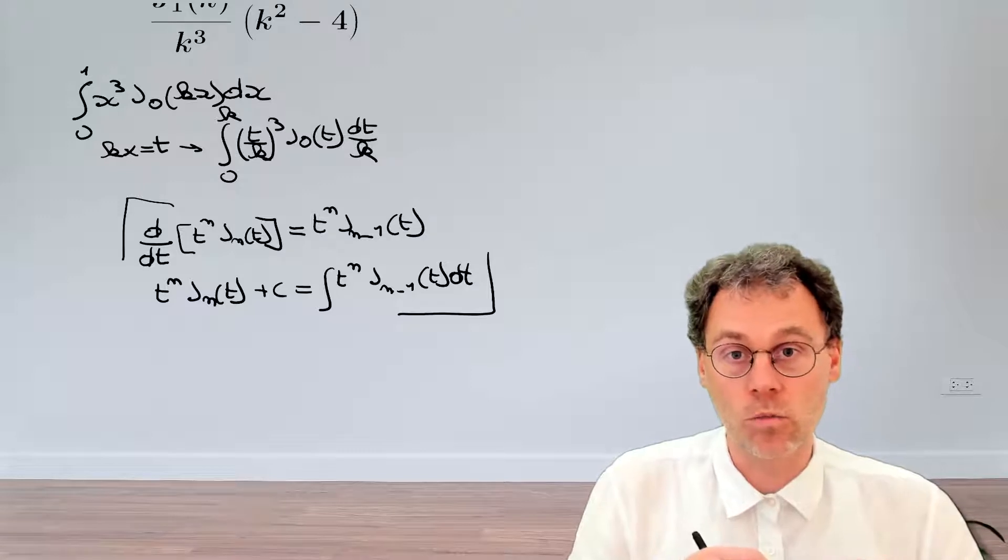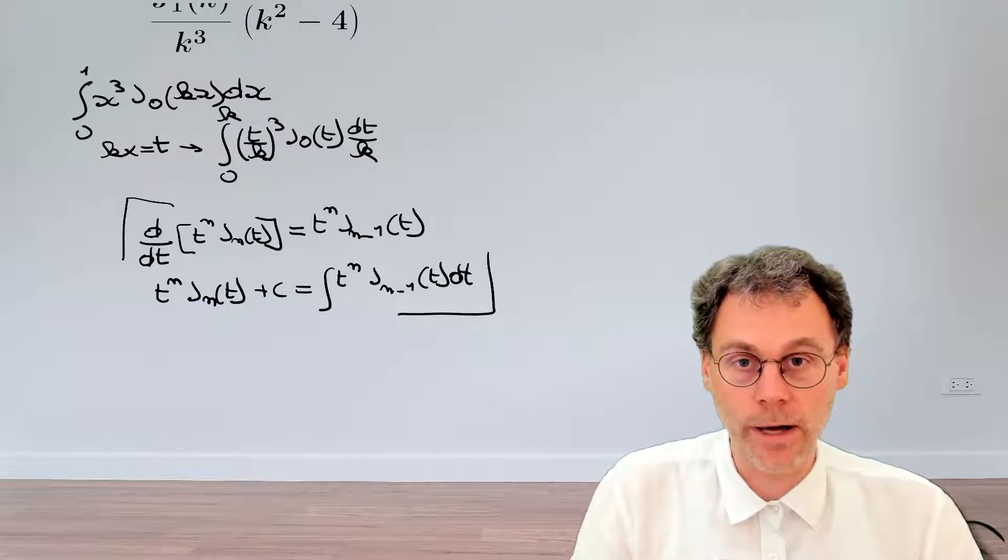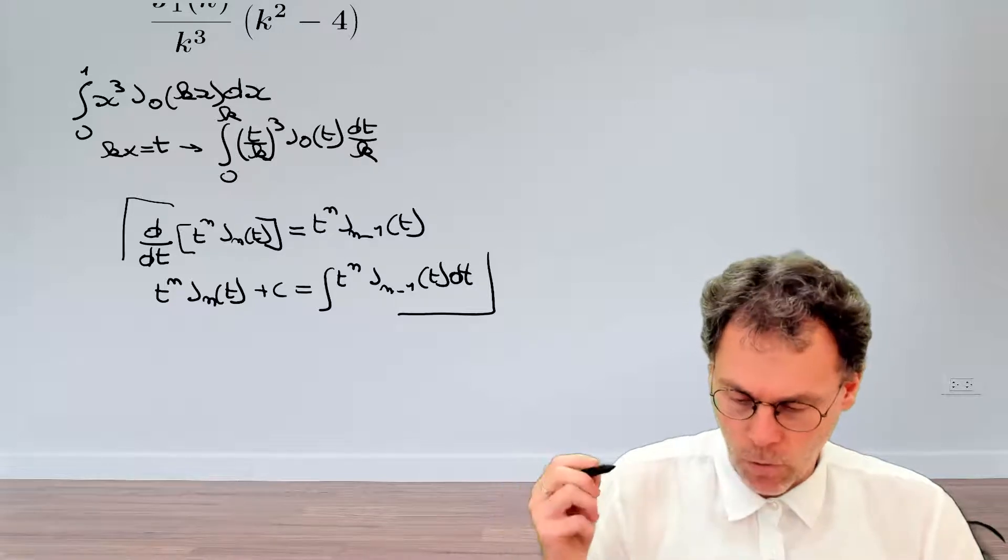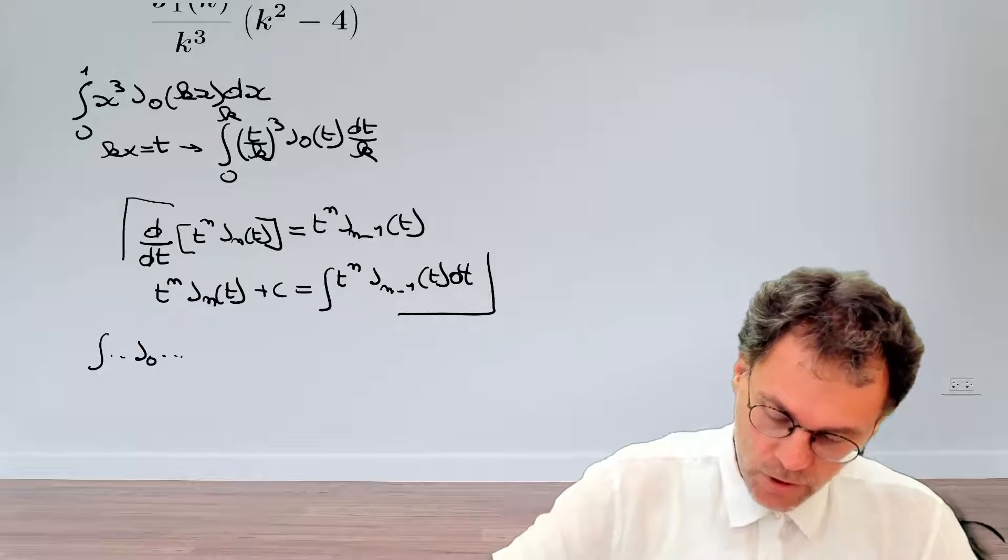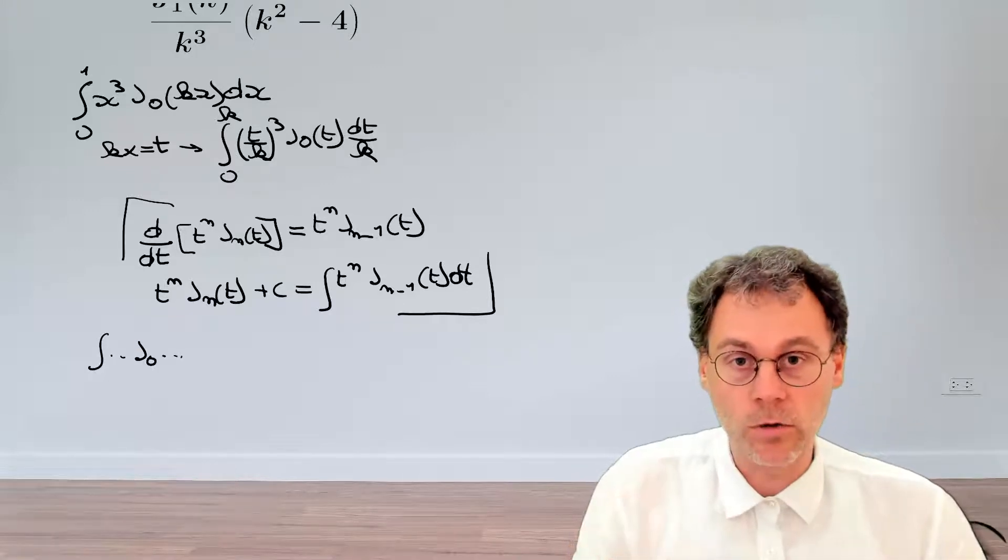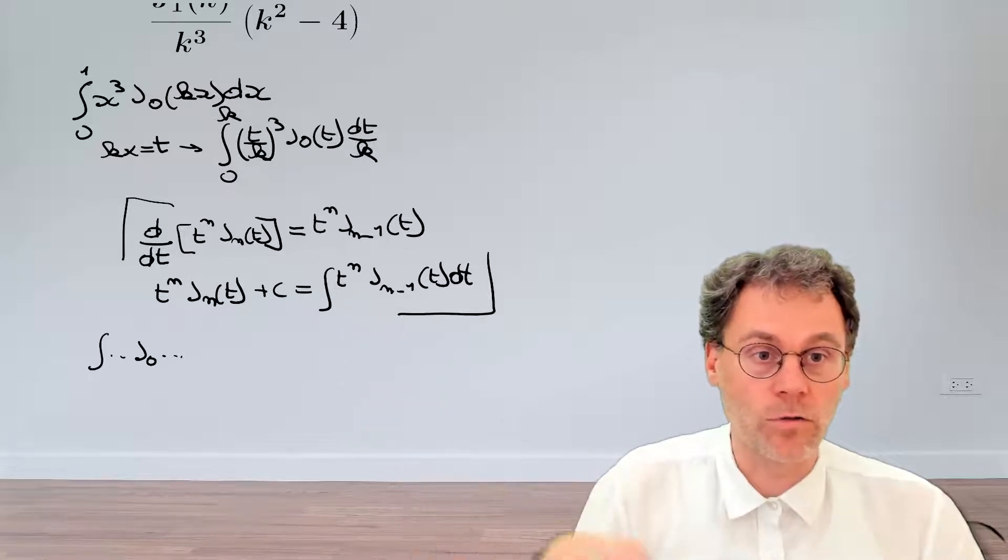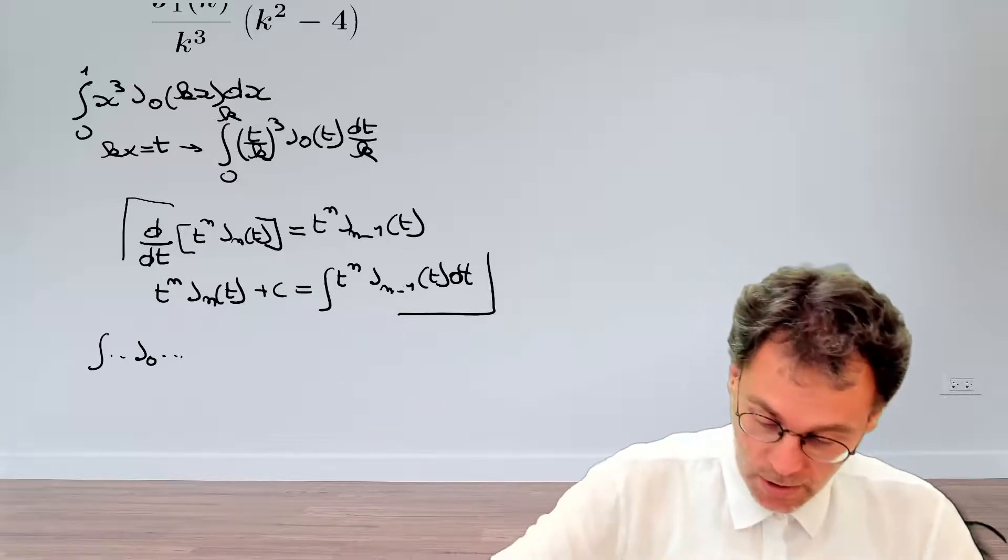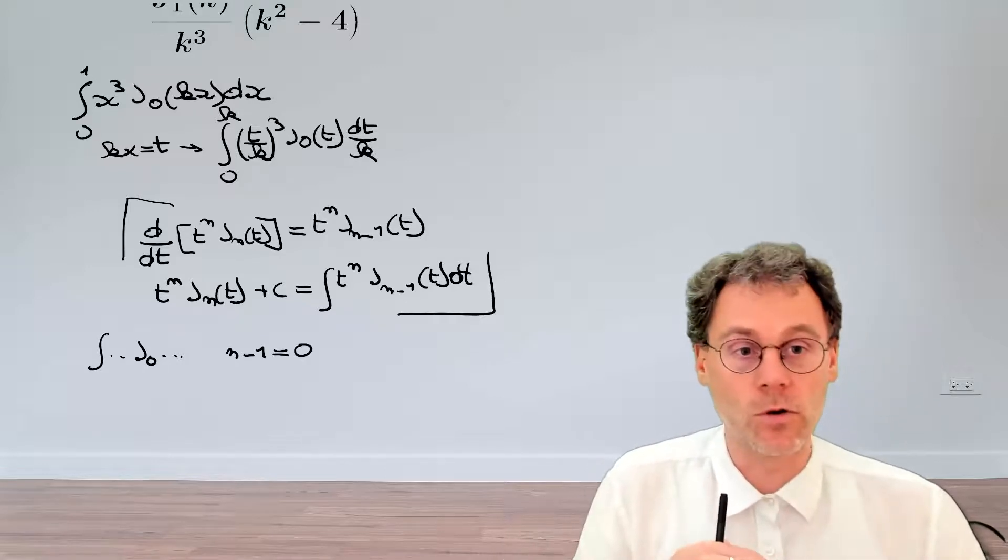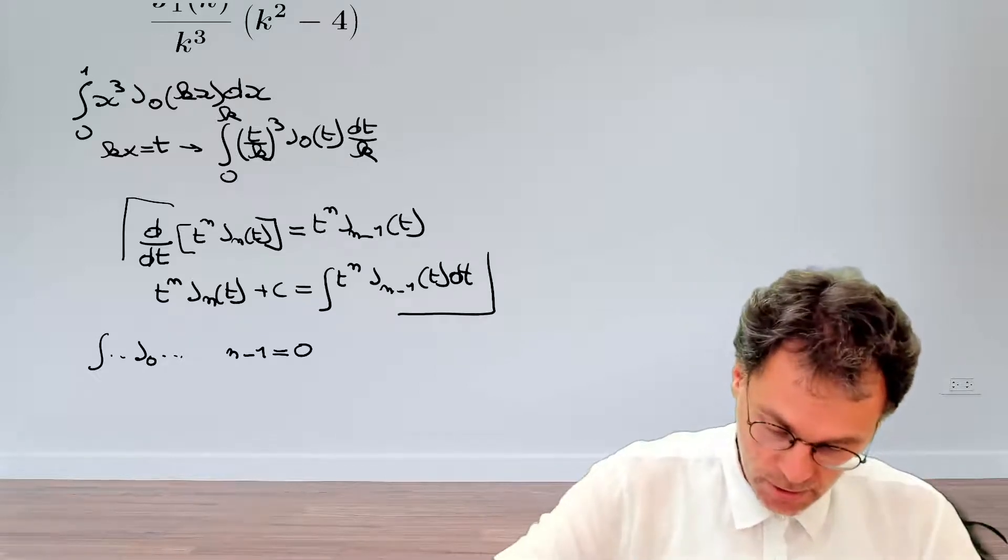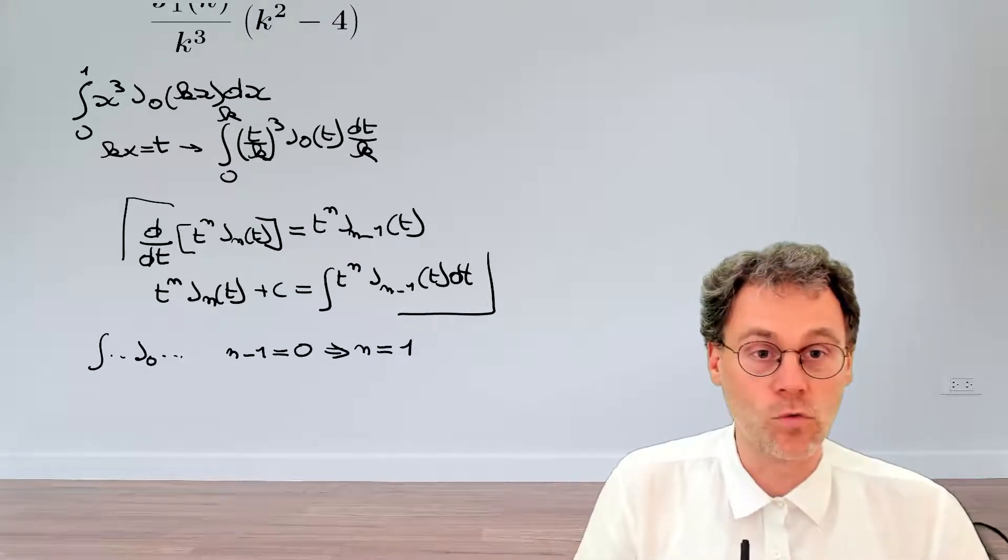The question now is what value of n should we pick here? What we're interested in is an integral involving a Bessel function of order 0. Now this formula here involves integrals of Bessel functions of order n minus 1. This means that n minus 1 should be equal to 0 for our purposes. So after a grueling calculation, we can derive that n is equal to 1.